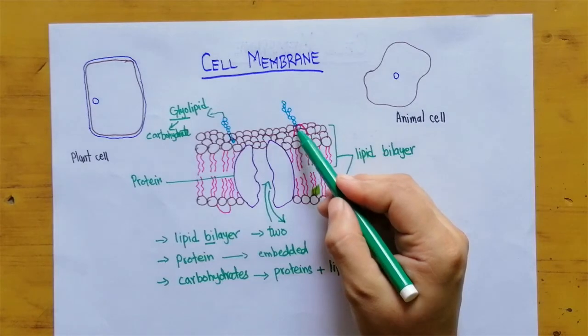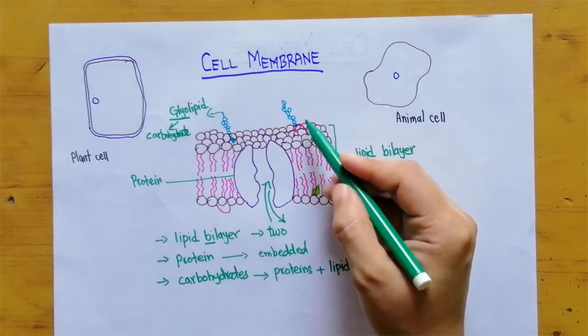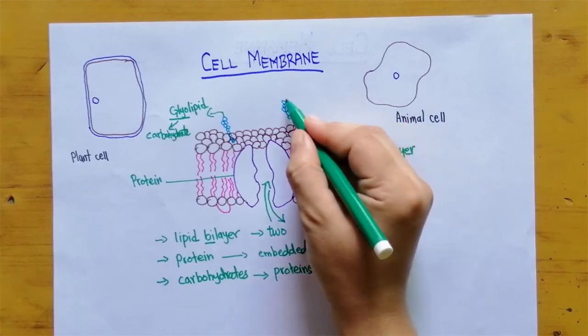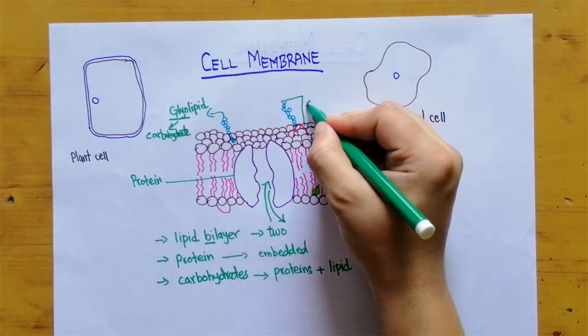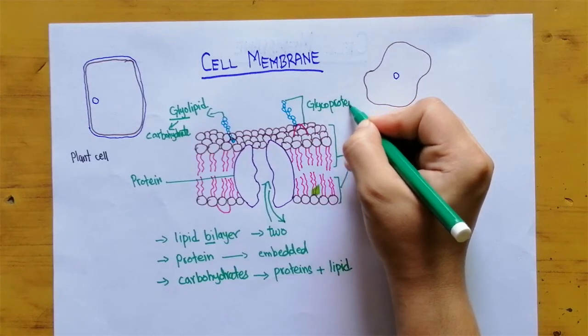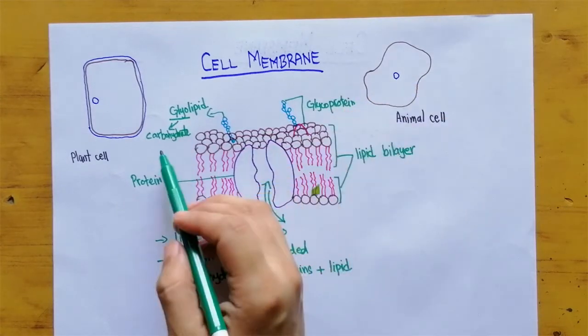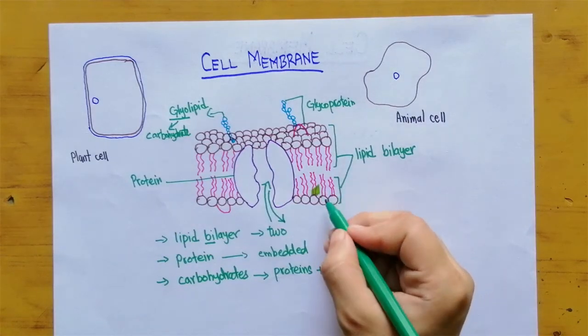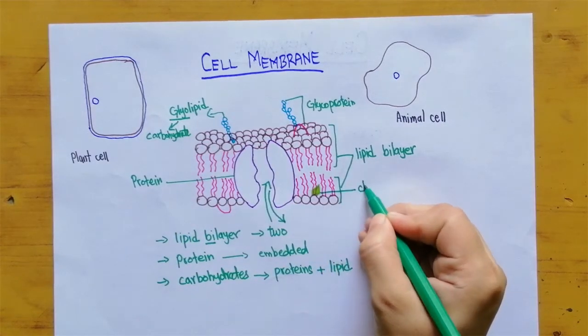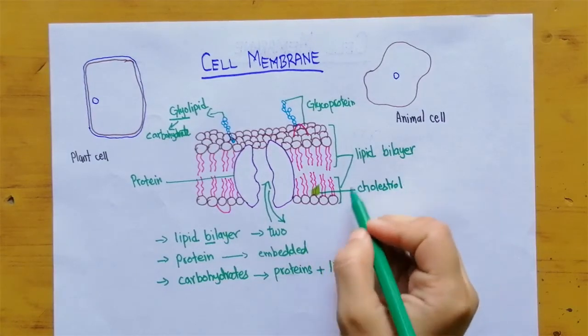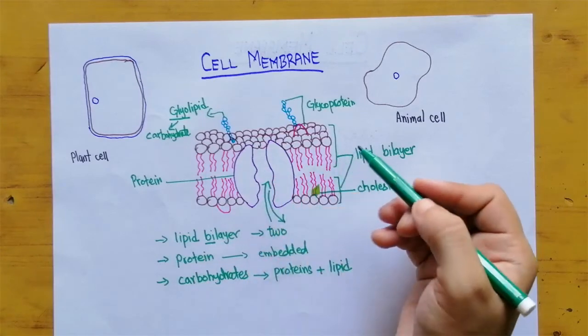While here this pink part is actually protein and when the carbohydrates they are attached with the protein they form glycoprotein. Again the glyco part is actually for the carbohydrates. There are some cholesterol present in the cell membrane.